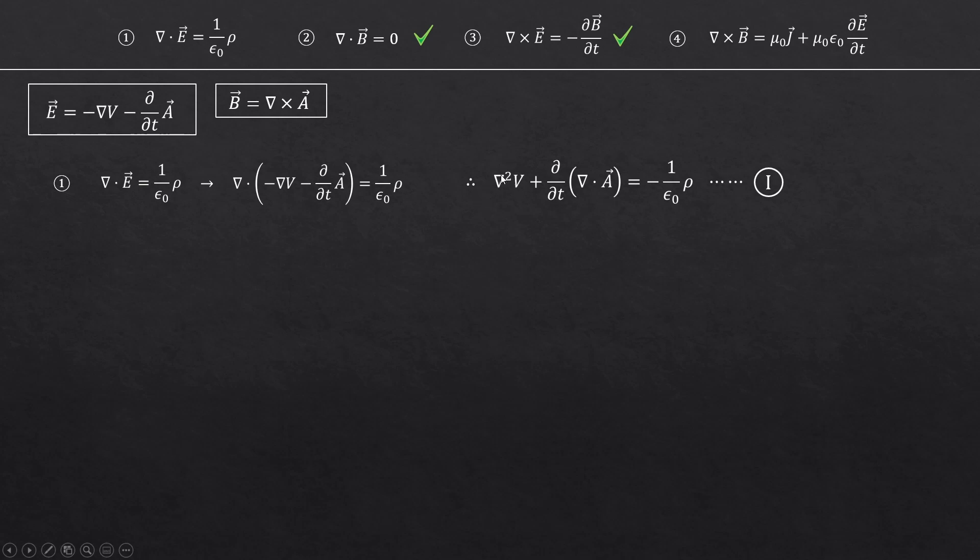The second order derivatives. And again, d over dt and the divergence symbol are exchangeable. So, I can say d over dt divergence of A. I'll put a roman number 1 and leave this expression aside for now.